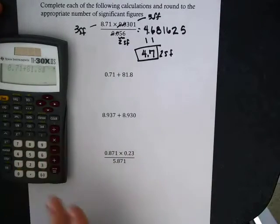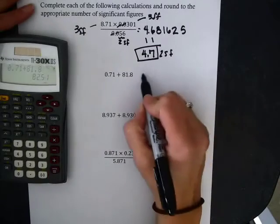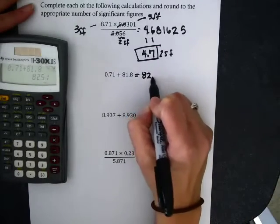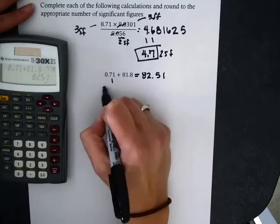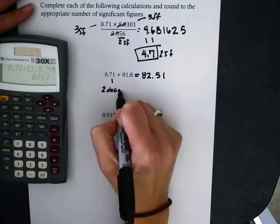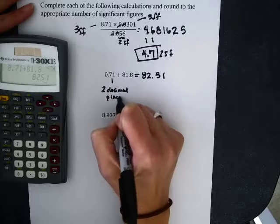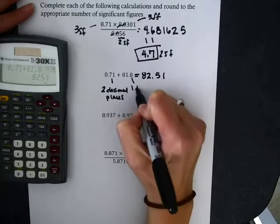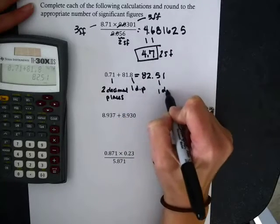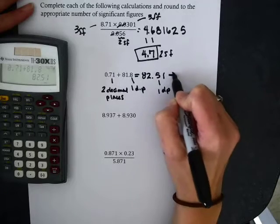Next up, I'm going to add in my calculator, and now this time it was addition. So now I'm looking at numbers after the decimal, 2 numbers after the decimal, 1 number after the decimal. My answer should have the minimum of those. So it should have 1 number after the decimal, which is 82.5.